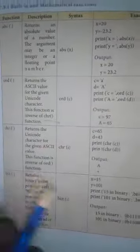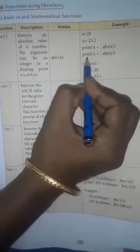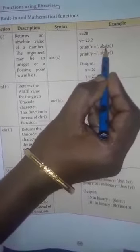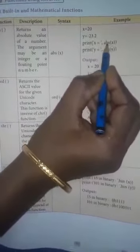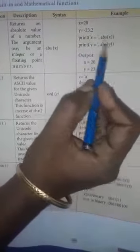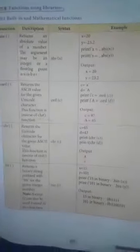Any built-in function or mathematical function you use, you pass it to the print function. For example: x = 20, y = -23.2. Then print(x =, abs(x)) and print(y =, abs(y)). The output: x is 20 (same value), y is 23.2 — the minus symbol is removed. So abs() returns only the absolute value with the sign removed.